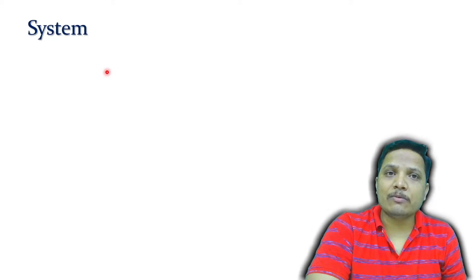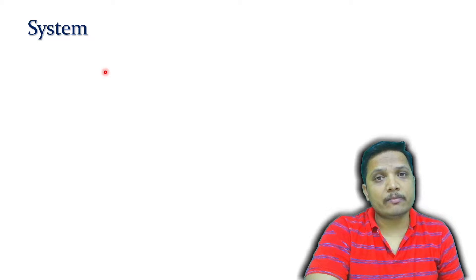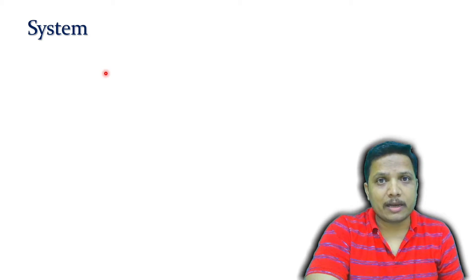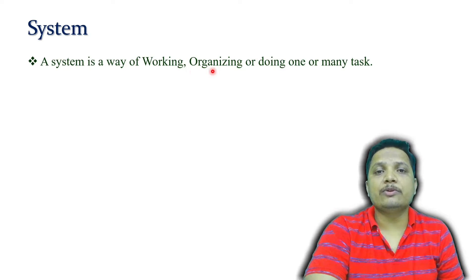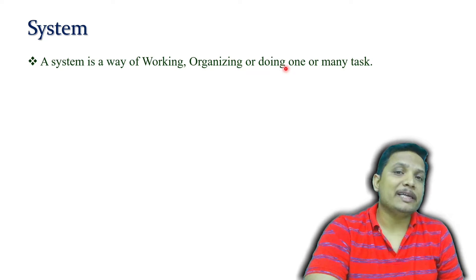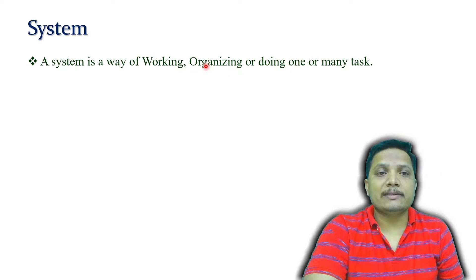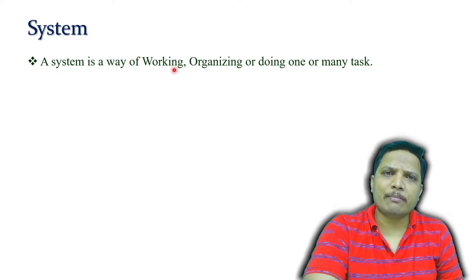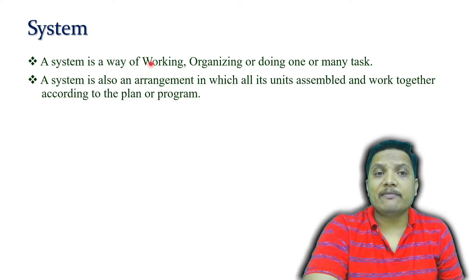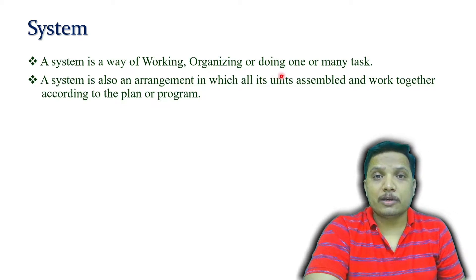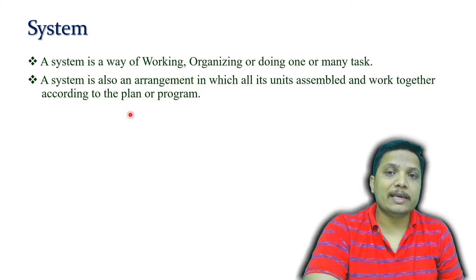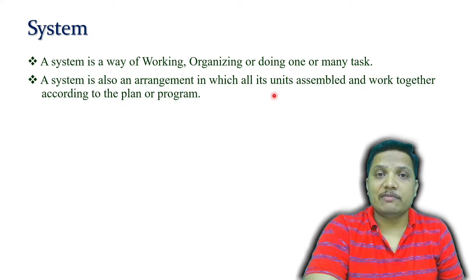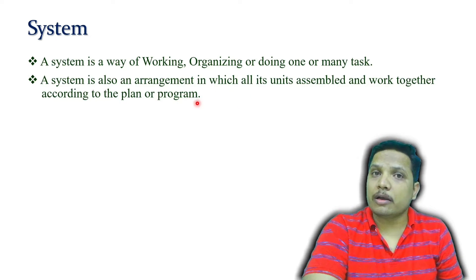I'll give you three different definitions of a system. First, a system is a way of working, used to organize or execute one or many tasks. Second, a system is an arrangement in which we assemble multiple units together and execute a particular plan or program.